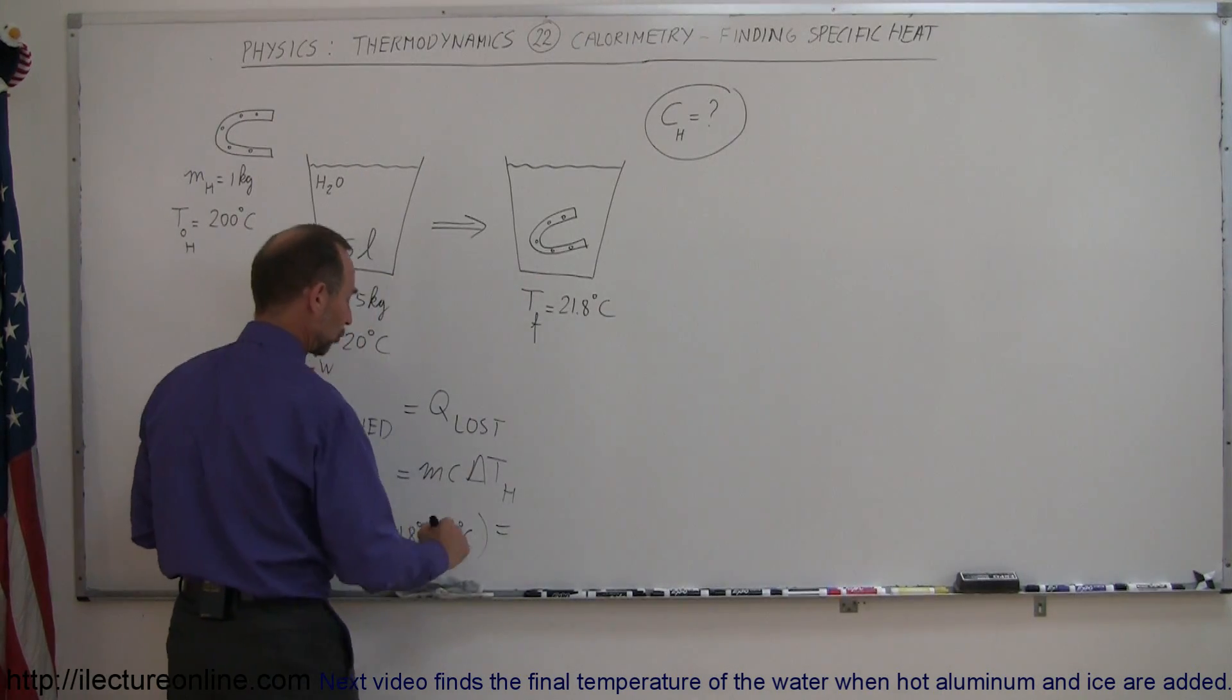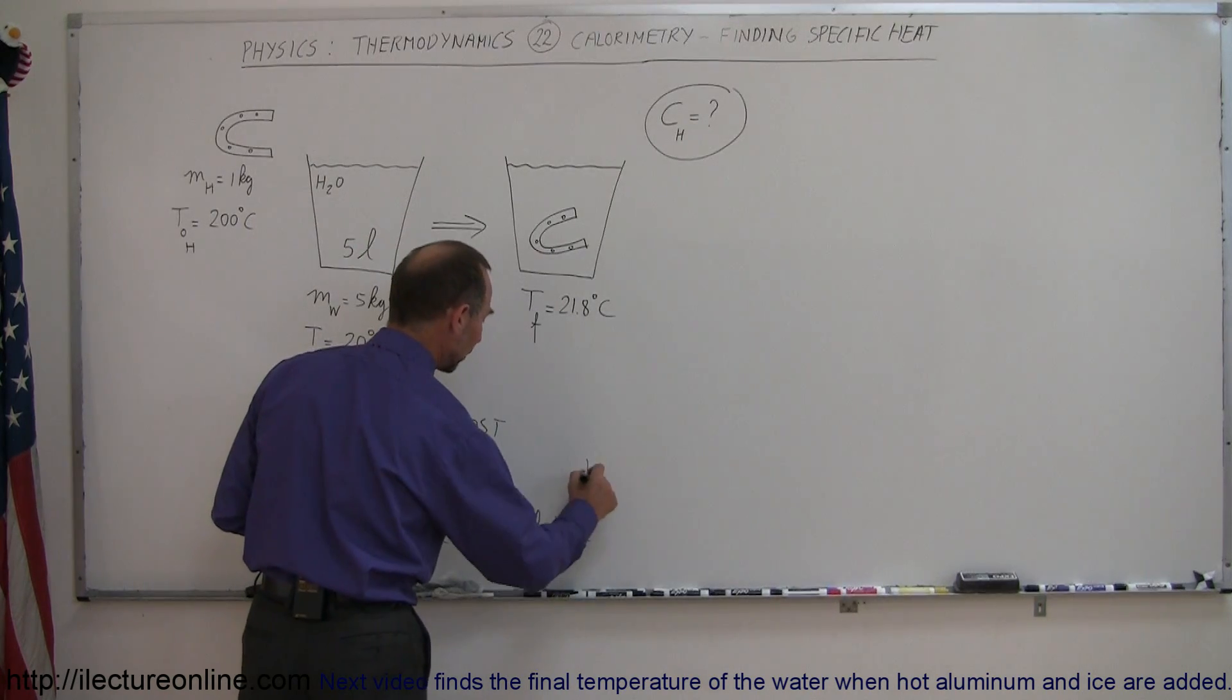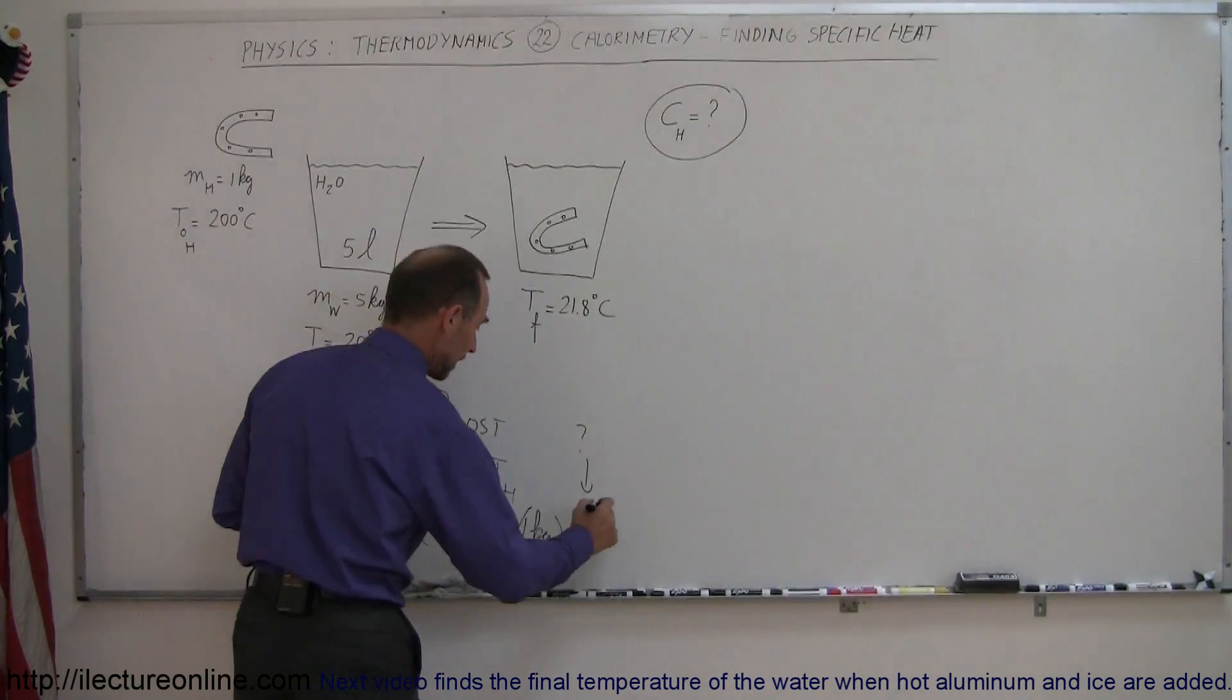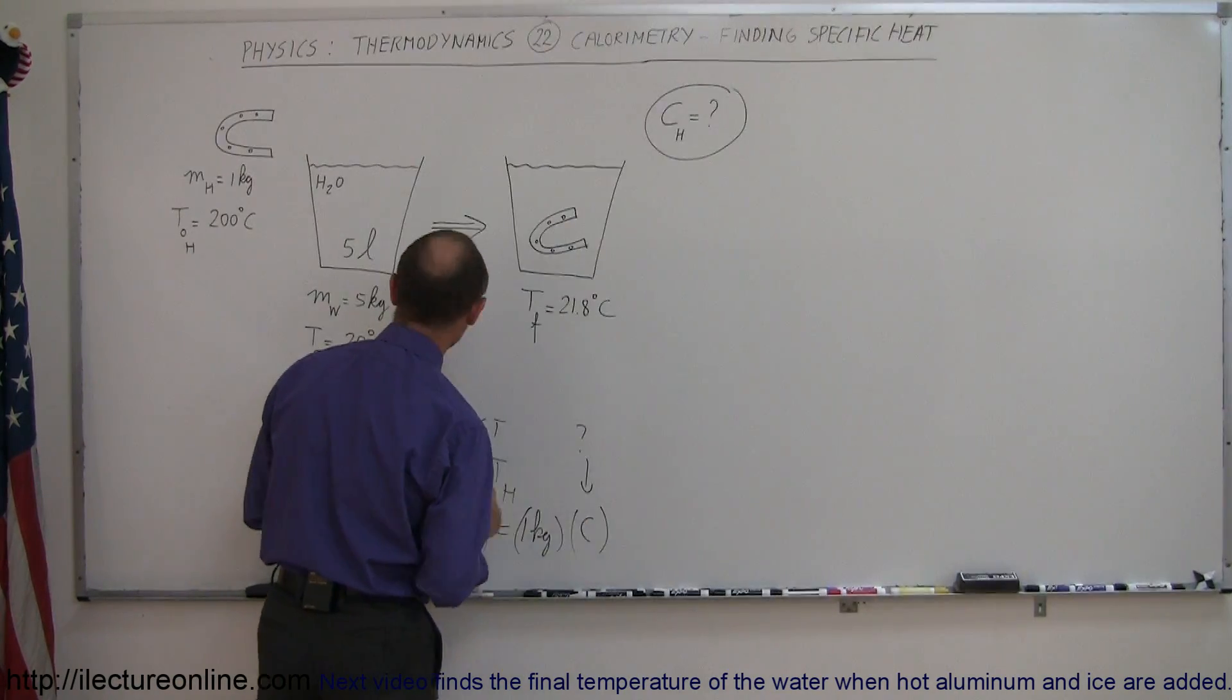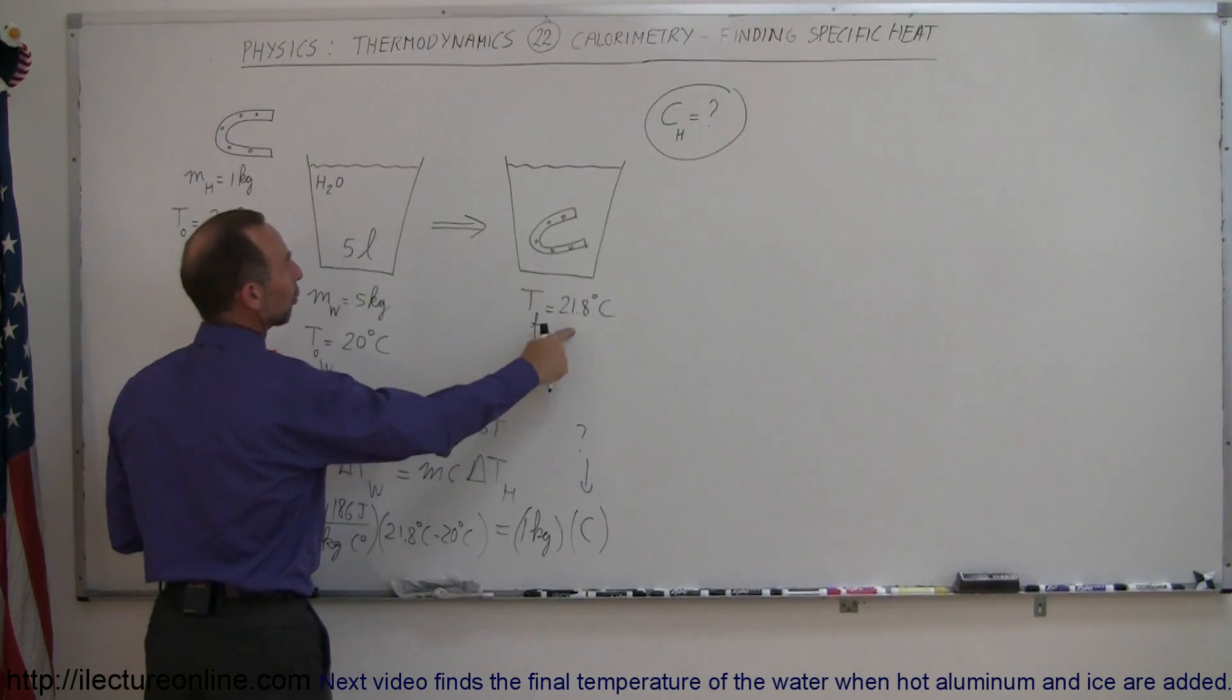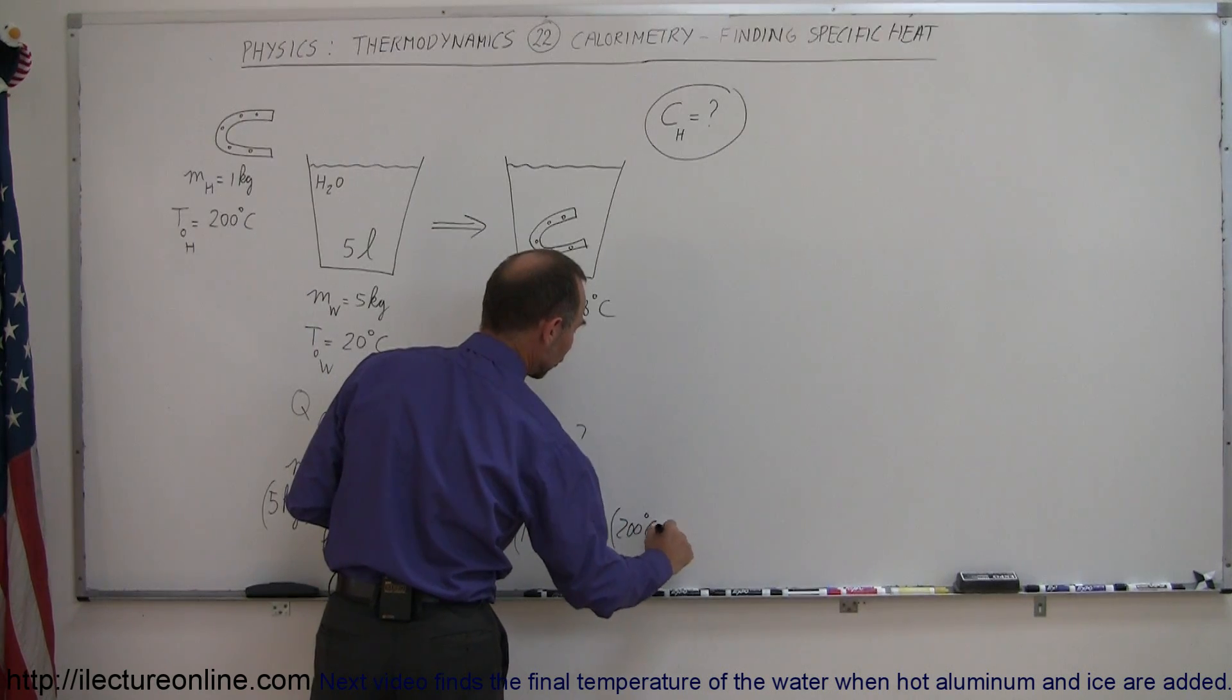We set that equal to the mass of the horseshoe, which was 1 kilogram, times the specific heat, and that's what we're looking for. And times the change in the temperature. Now we started out at 200 degrees centigrade, and we ended up at 21.8 degrees centigrade. So that would be 200 degrees centigrade minus 21.8 degrees centigrade.